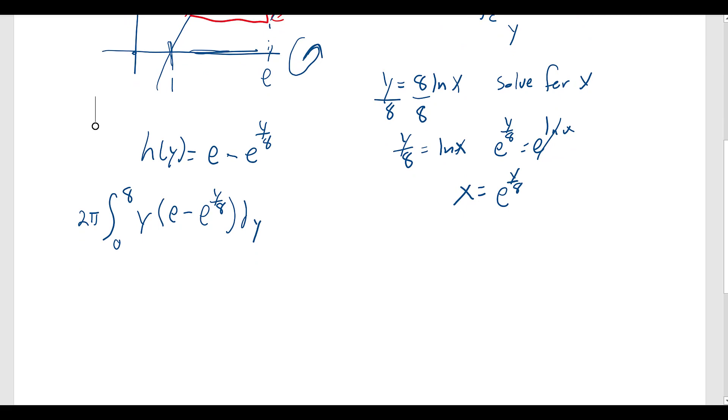You could throw that into Desmos and it'll spit out the answer. I'll do a little bit of the legwork here. So that's going to be 2π integral from 0 to 8 of e times y minus y e to the y over 8 dy.